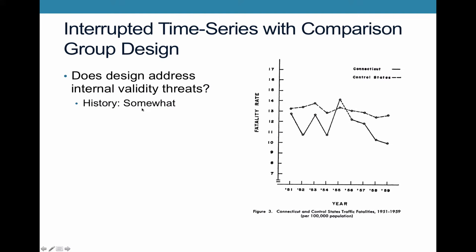So does this actually address the internal validity threats we laid out before? History? Somewhat, but you might have some sort of effect. If you had a dry period, you're going to be having the same effect in those control states, so you're not able to say that it wasn't there, but it's much better than it was before because you're able to look to see what this general trend is. And likewise, with maturation, you see that it looks here like there's maybe a slight downward trend, but it looks pretty flat. And here we see that it's kind of going up and then it's going down. So we're able to see that there's not this dramatic downward trend over time. That's something that we see in Connecticut, but not in those control states.